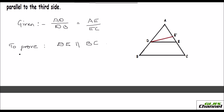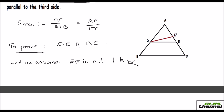To prove this, let me first assume another point E dash, already marked on AC. We assume that DE is not parallel to BC. So we take another point E dash, and assume that line DE dash is parallel to BC.